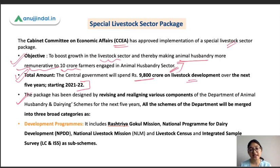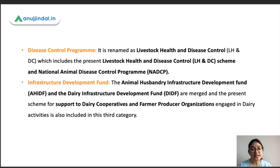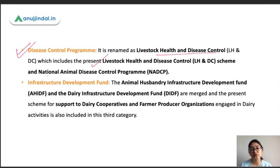The package has been designed by revising and realigning various schemes of the Department of Animal Husbandry and Dairy. All schemes are broadly merged into three categories. The first is the Development Program, covering Rashtriya Gokul Mission, Dairy Development Program, and National Livestock Mission. The second is the Disease Control Program, renamed Livestock Health and Disease Control, which combines the existing Livestock Health and Disease Control scheme with the National Animal Disease Control Program.